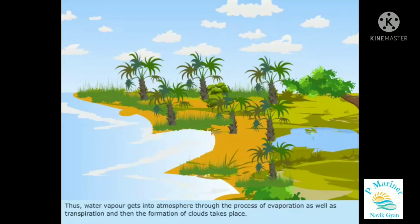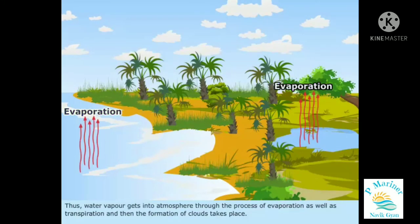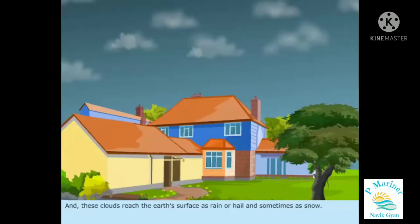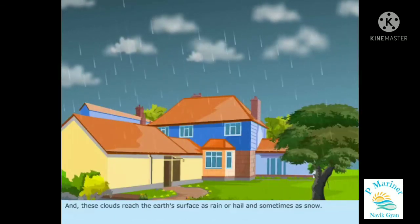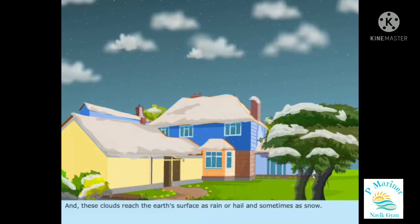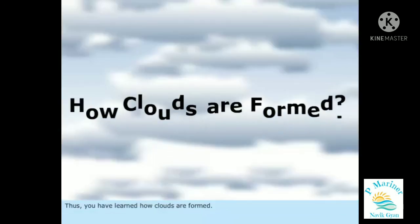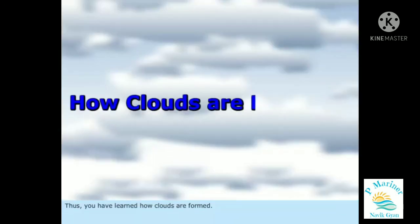Thus, water vapor gets into the atmosphere through the process of evaporation as well as transpiration, and then the formation of clouds takes place. These clouds reach the earth's surface as rain or hail and sometimes as snow. Thus, you have learned how clouds are formed.